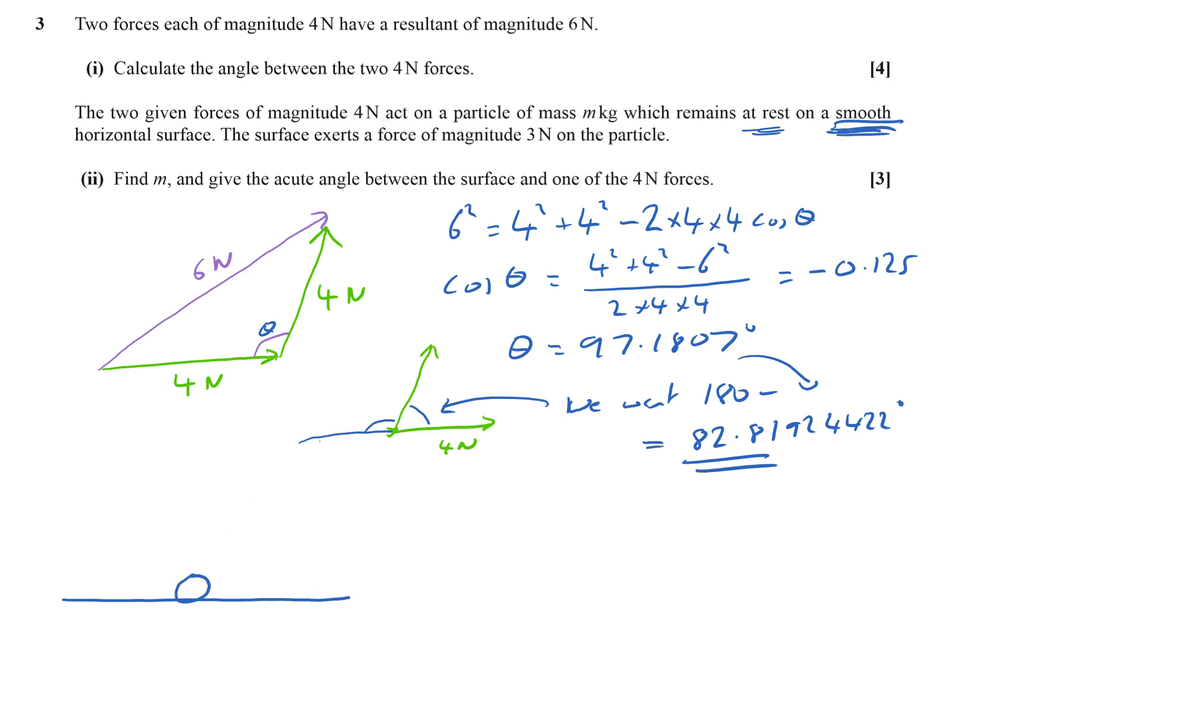So let's just put some forces on here. We can put the weight coming straight down, that's mg. The surface exerts a force of three newtons on the particle, so that's a normal contact force that should be going straight up. Three newtons. And then we've got to put these two forces, so I'll do it in purple here, so that's six newtons, also going straight up.